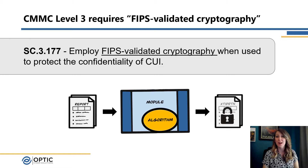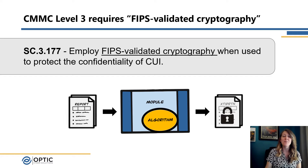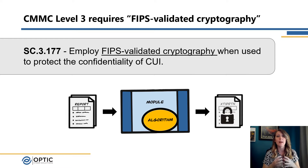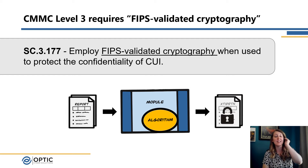A lot of the questions we're getting are really stemming from the same practice, and in most cases it's coming from SC.3.177 from the System and Communications Protection domain. The practice states that we must employ FIPS validated cryptography when used to protect the confidentiality of CUI. Seems simple enough — except what is FIPS validated cryptography? We want to make sure that when we've got CUI, it passes through a crypto module that has a trusted encryption algorithm, implemented correctly, so that on the other side we actually have encrypted data.